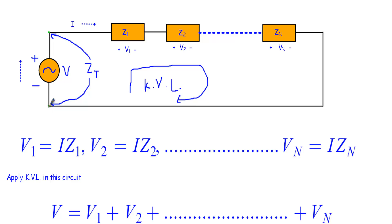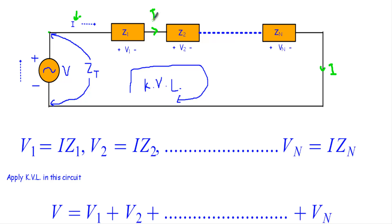In this circuit we apply an alternating voltage V. During the positive half cycle, current flows in the direction indicated by the arrow. If we apply the RMS value of voltage V, this is a total series circuit. Let's say the RMS value of current is I. Since it is a series circuit, current I will be the same throughout the entire circuit.